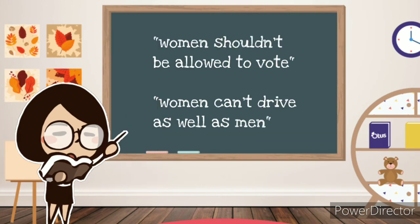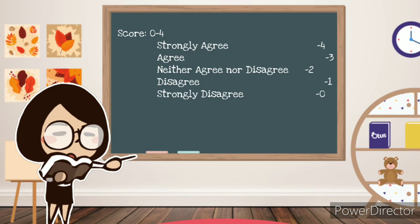One of the items might be, women shouldn't be allowed to vote, while another might be, women can't drive as well as men. We would then assign each of the response categories a score of 0 to 4.